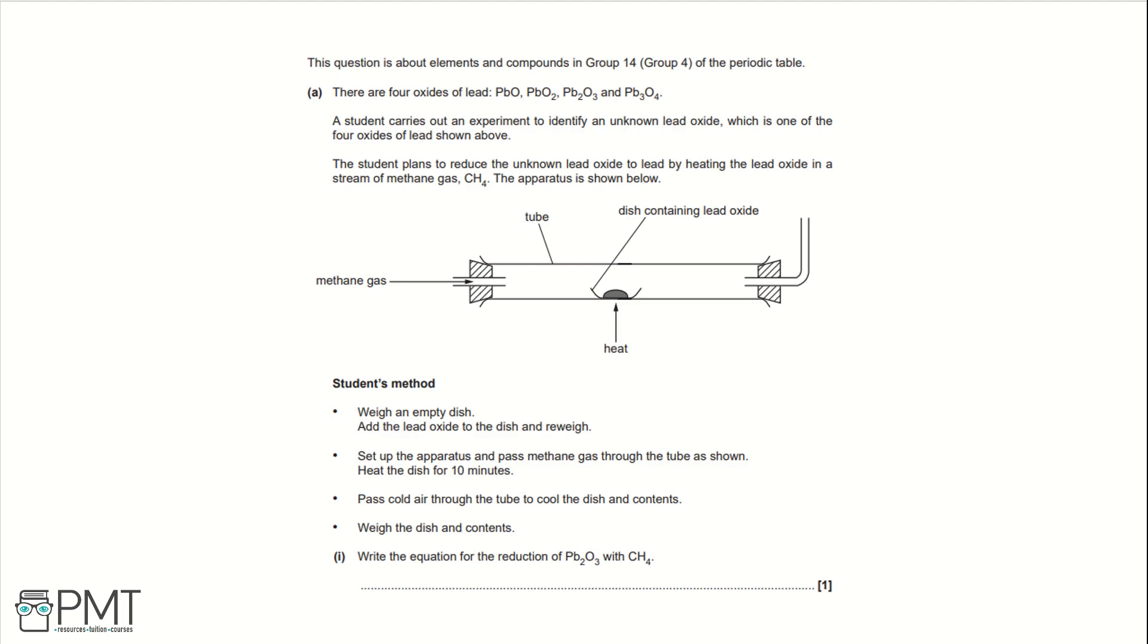The apparatus is shown below. The student's method is that they're going to weigh an empty dish, add the lead oxide to the dish and re-weigh, set up the apparatus and pass methane gas through the tube as shown, heat the dish for 10 minutes, pass cold air through the tube to cool the dish and contents, weigh the dish and contents. Part 1.